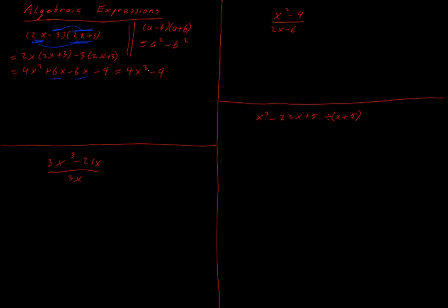Knowing the difference of two squares pattern is extremely important. In our example, 4 is 2 squared, so we get (2x)² minus 3², which is a² minus b². There have been questions in the Leaving Cert that are virtually impossible to get full marks on without recognizing DOTS. Anytime we see a perfect square followed by a minus sign, we should immediately ask: is this difference of two squares?